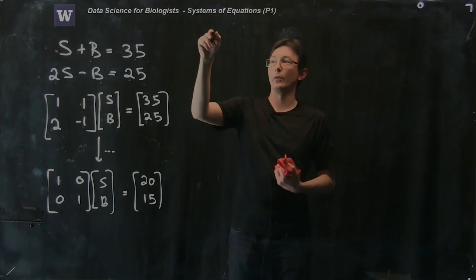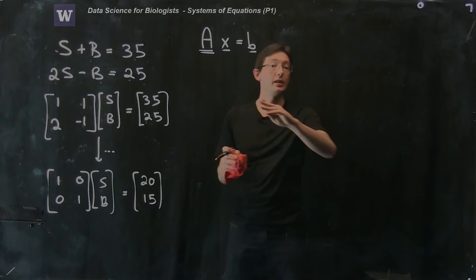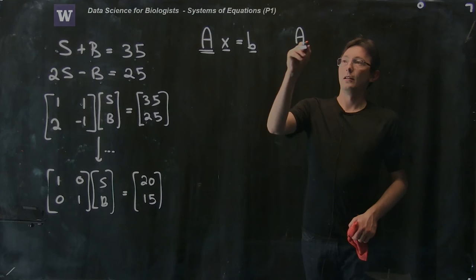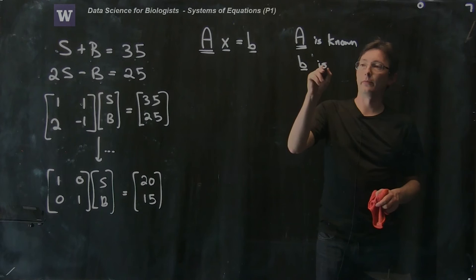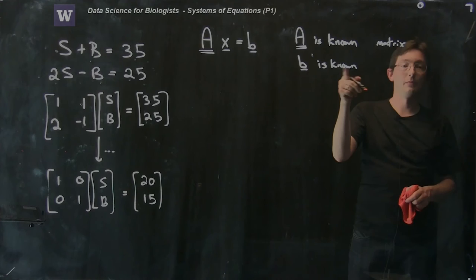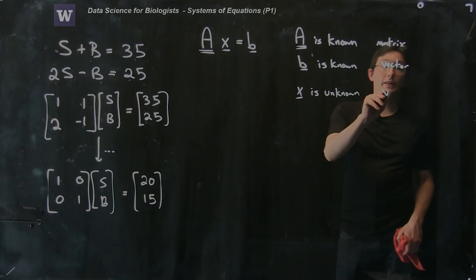So I can take this system of equations and I can write it as a matrix system of equations. A times x equals b. A is my matrix, x and b are vectors. Let me just tell you what you know and what you don't know. So A is known, right? A is all of this information in this A matrix, it's all of these coefficients. We know what A is, and b is also known. A is a matrix and b is a vector, and x is an unknown vector. X is unknown.